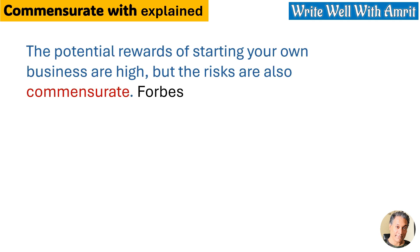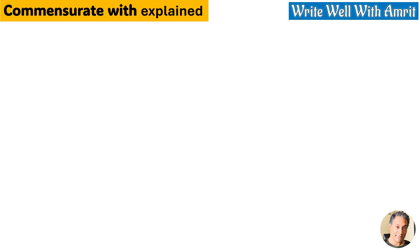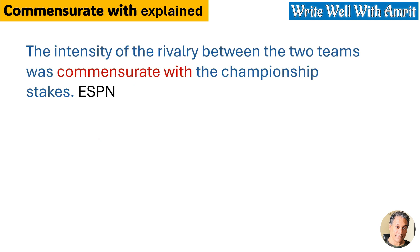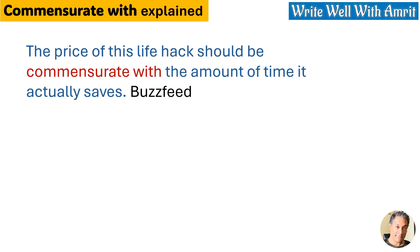From Forbes: 'The potential rewards of starting your own business are high, but the risks are also commensurate.' Here, 'commensurate' means 'proportional' and not 'in proportion to.' From ESPN: 'The intensity of the rivalry between the two teams was commensurate with the championship stakes.' From Buzzfeed: 'The price of this life hack should be commensurate with the amount of time it actually saves.'